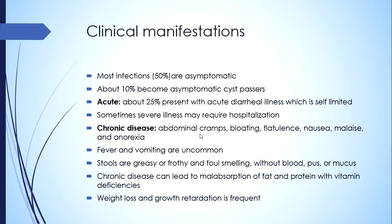Almost 50% of infections are asymptomatic; 10% become asymptomatic cyst passers who are themselves asymptomatic but are a source of infection to others. About 25% present with an acute diarrheal illness which is usually self-limited. The diarrhea can be watery and profuse, sometimes severe enough to require hospitalization. Some patients present with chronic disease with abdominal cramps, bloating, flatulence, nausea, malaise, and anorexia. Fever and vomiting are uncommon. The stools are greasy, frothy, and foul-smelling without blood, pus, or mucus — giving a picture of malabsorption with no inflammatory component.